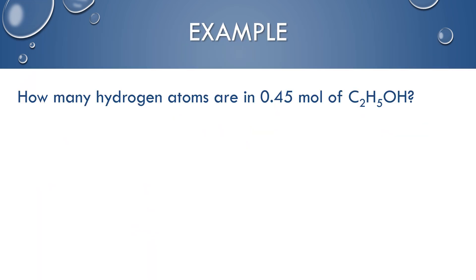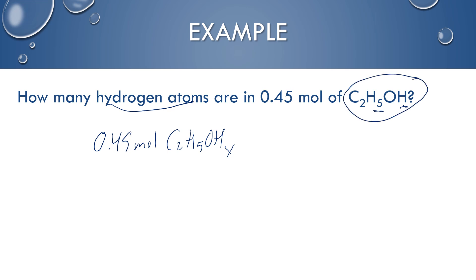Let's look at a couple more examples. How many hydrogen atoms are in 0.45 moles of C₂H₅OH, which is ethanol or vinegar? There are 6 hydrogen atoms in the whole compound, so I want to take care of that first. In 1 C₂H₅OH there are 6 hydrogens, so multiplying by 6 gives 2.7 moles of hydrogen.